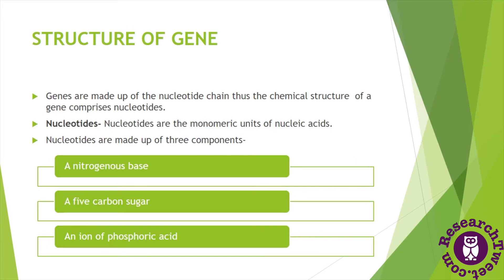Now let's understand about the structure of a gene. Genes are made up of nucleotides, because we know that DNA and RNA are types of nucleic acids, and nucleic acids have monomeric units called nucleotides. Similarly, genes are also made up of nucleotides, and the nucleotide molecule acts as the monomeric unit for all genes.